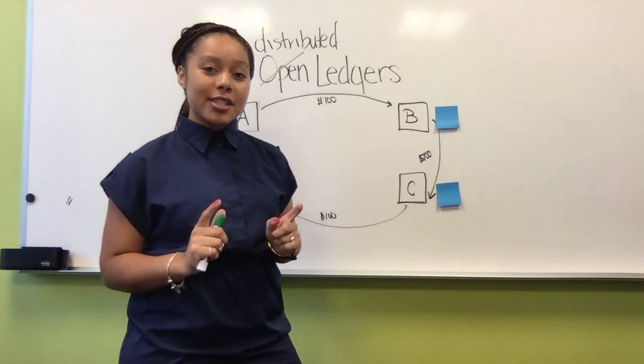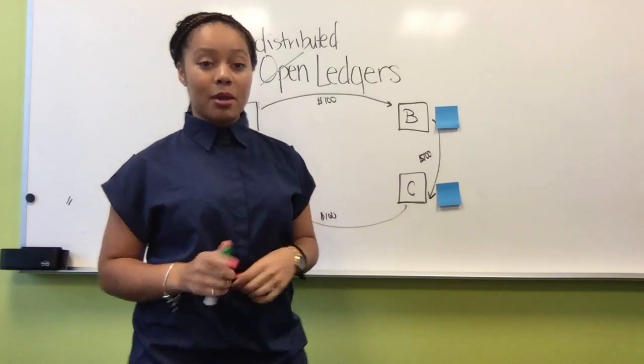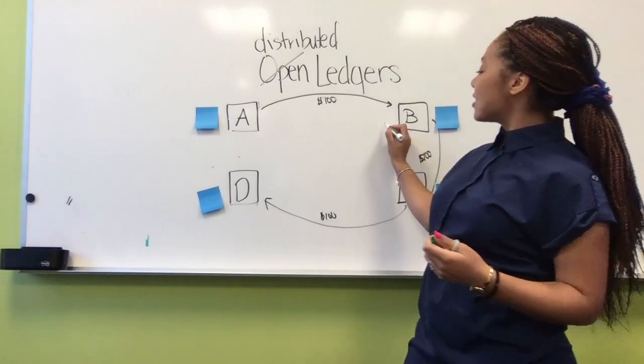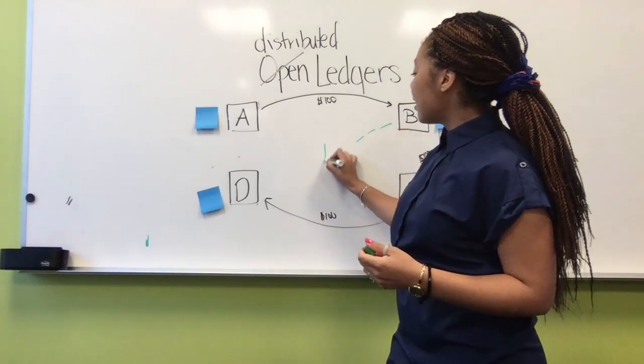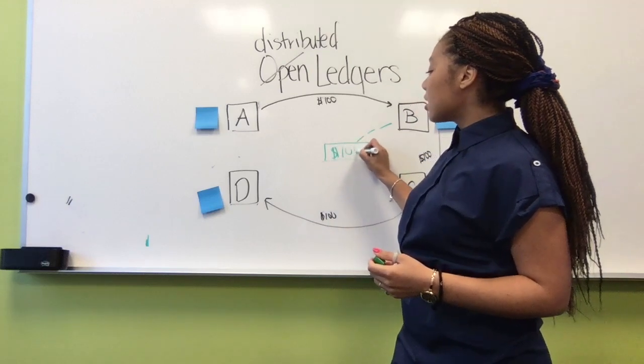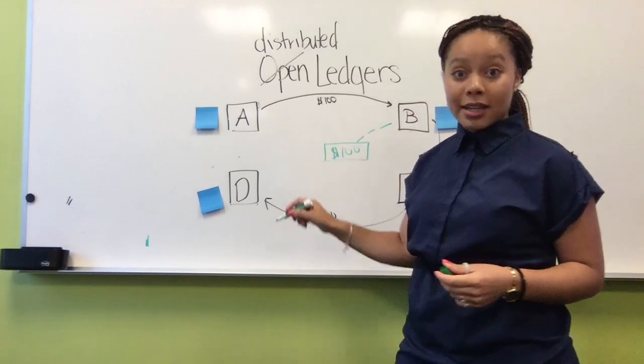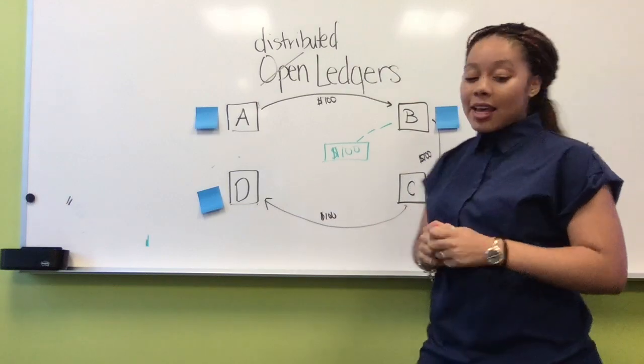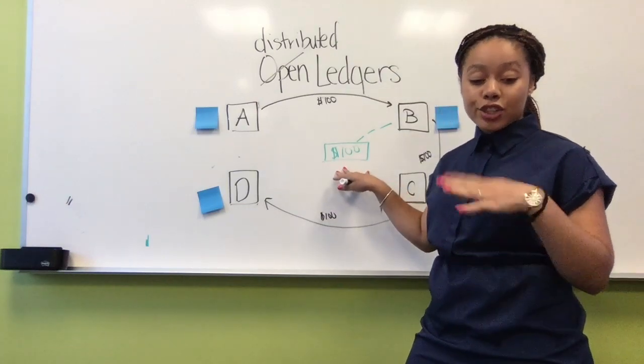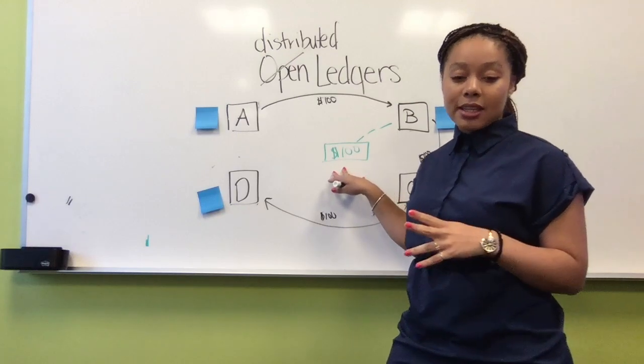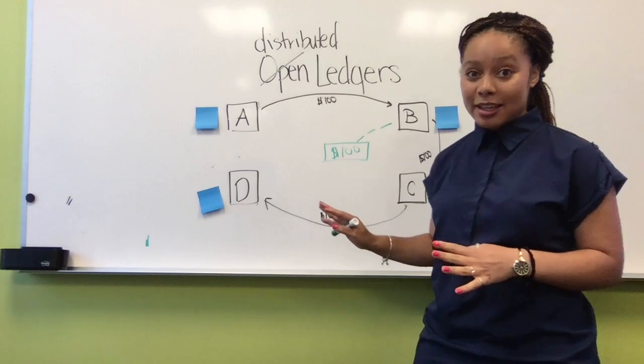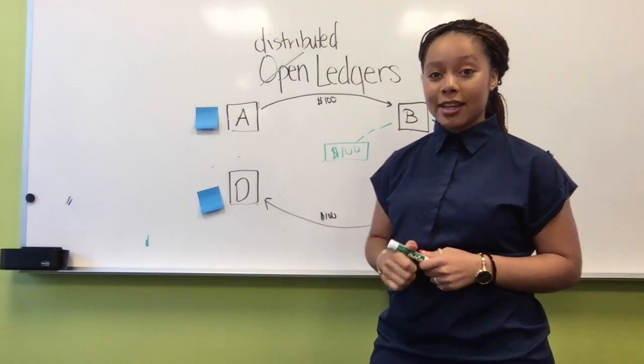So here's an example that illustrates that concept. We have Cardi B. Cardi B broadcasts to the entire system, hey guys, I want to send a hundred dollars to party D. But in the blockchain system, this is an unvalidated transaction. It needs to be validated. So this is not going to be put into anyone's ledger yet. Now who can validate this transaction?